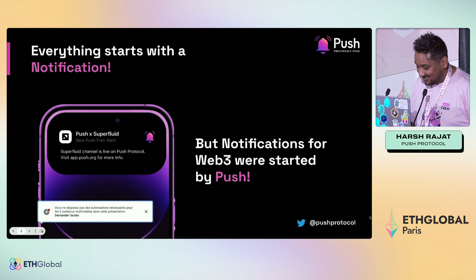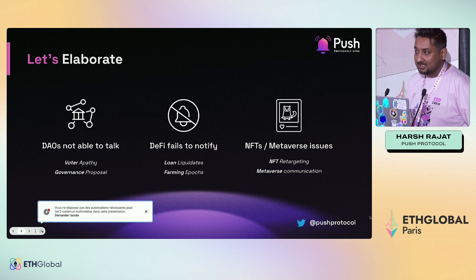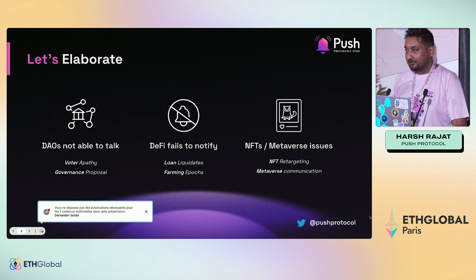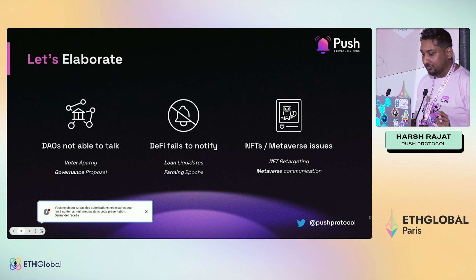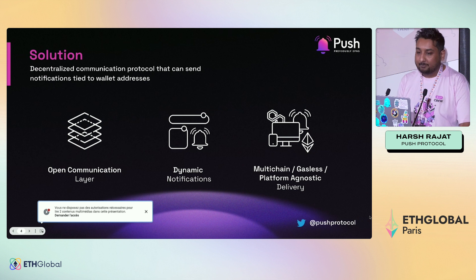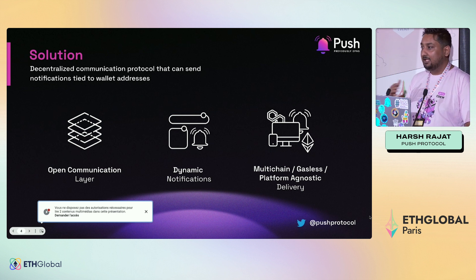To elaborate a bit more on why: DAOs are not able to communicate whenever a governance proposal happens or whenever anything happens around voting — there's no way to notify those voters or wallet addresses. That's where Push helps. DeFi loan liquidations, farming epochs — all of these can be addressed using Push notifications to wallet addresses. Whether you're building an L2-to-L1 bridge or targeting NFTs, anything and everything benefits from notifications. The solution is blockchain agnostic, platform agnostic, open yet secure, and works with dApps, backends, and smart contracts.